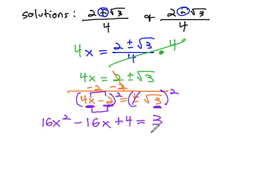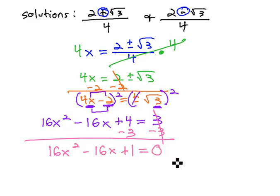We like our equation to equal 0, so we'll subtract 3 from both sides, and this gives us the equation 16x squared minus 16x plus 1 equals 0.